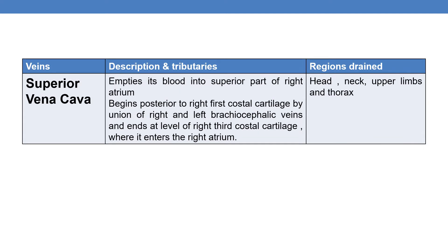Superior vena cava empties its blood into the superior part of the right atrium. It begins posterior to the first costal cartilage by the union of the right and left brachiocephalic veins, and ends at the level of the right costal cartilage where it enters the right atrium. The regions drained are the head, neck, upper limbs, and thorax.